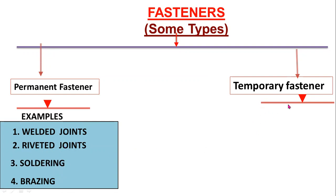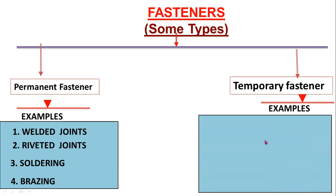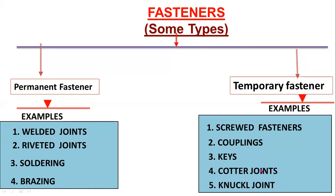Temporary or detachable fastenings are those fasteners which can be disassembled without destroying the connecting parts. The examples of temporary fasteners are screwed fasteners — meaning bolts and nuts — couplings, and keys. Permanent fasteners cannot be disassembled without destroying the connecting components, while temporary fasteners can be disassembled without destroying the connecting parts.